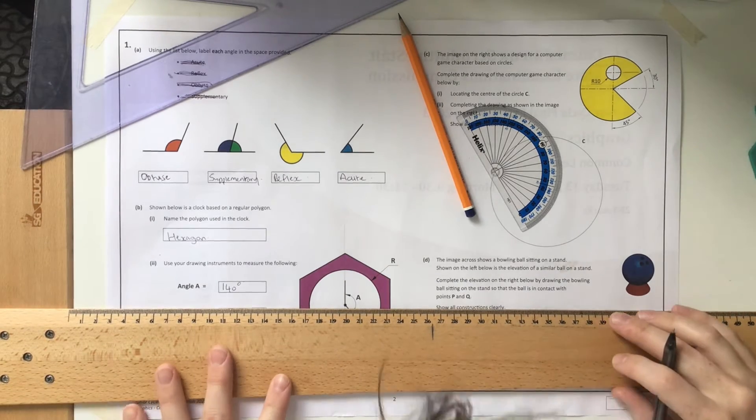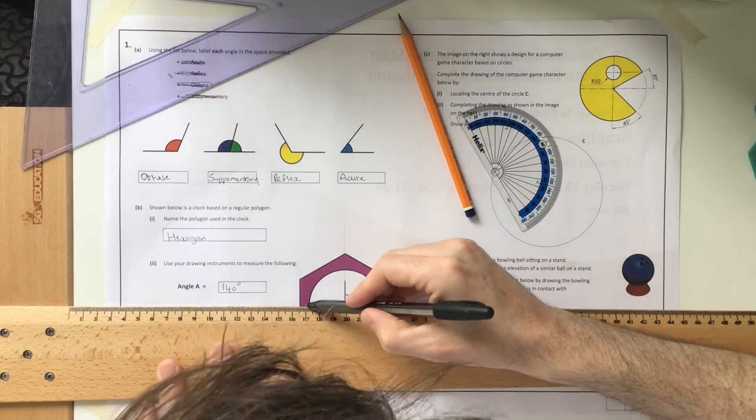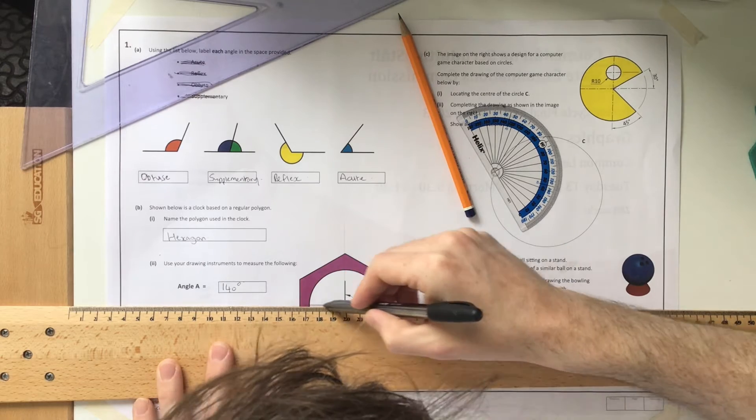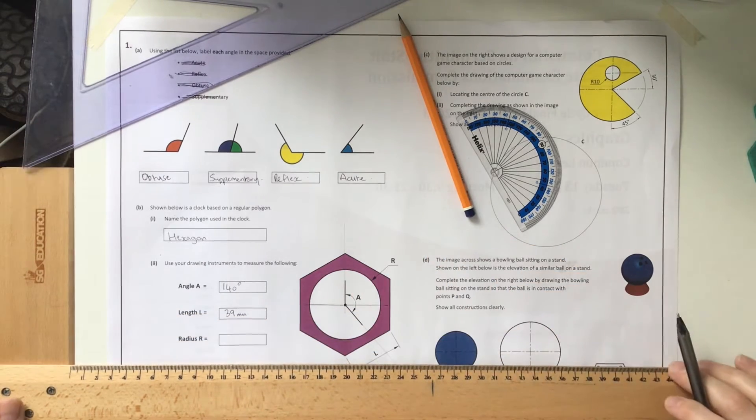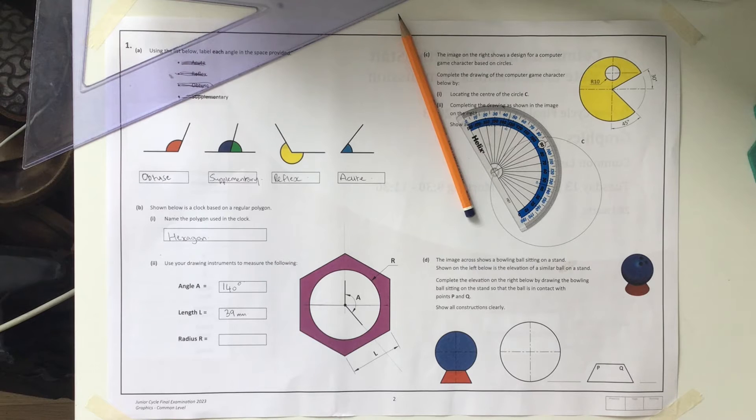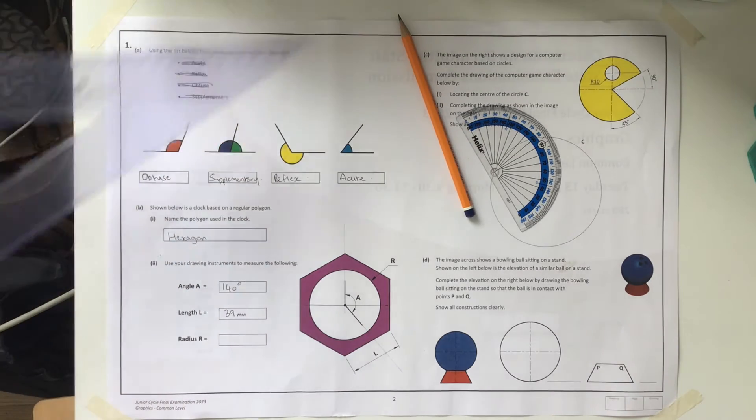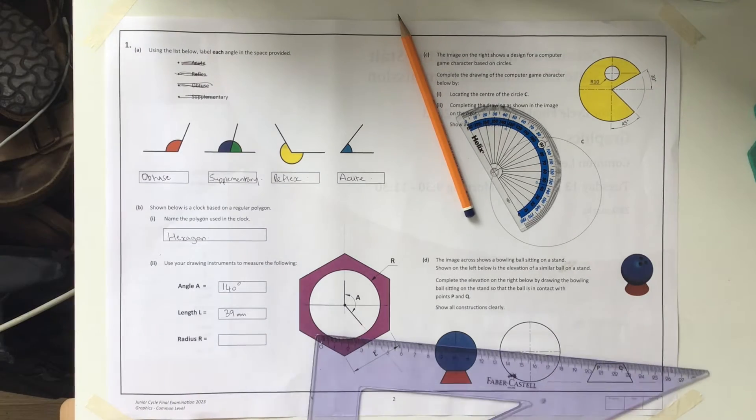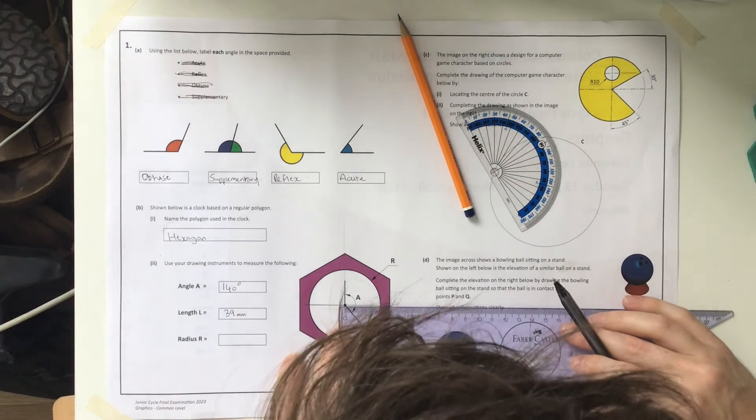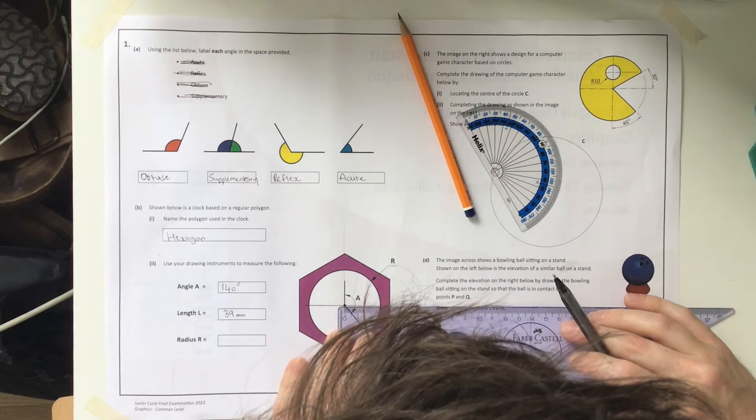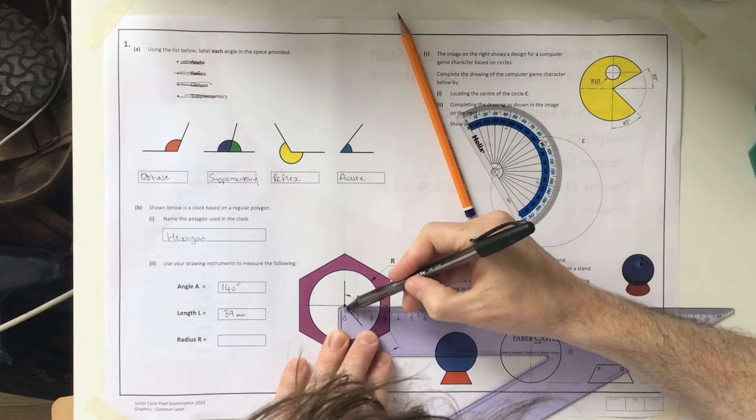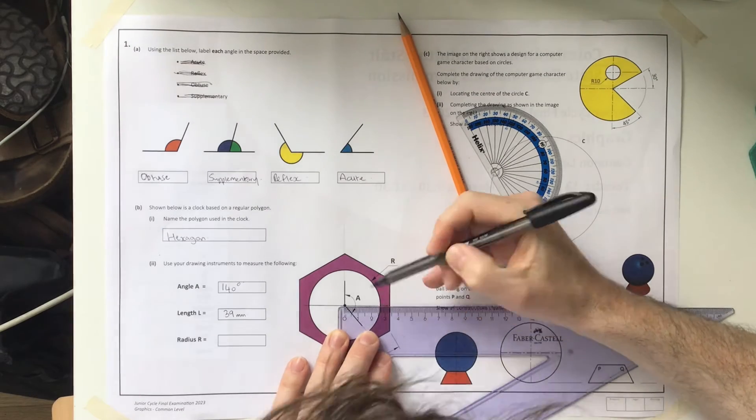For the radius, I'll draw a line through the center. We've already drawn radii when doing the angle - we did two of them - but I'm going to highlight this better to get a more accurate measure. Draw a line straight through the center using the set square.